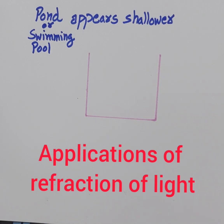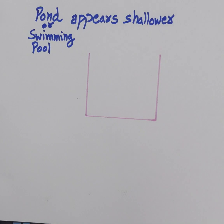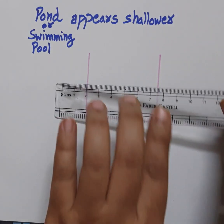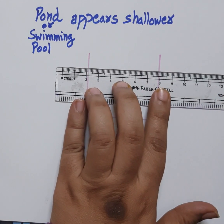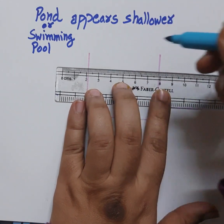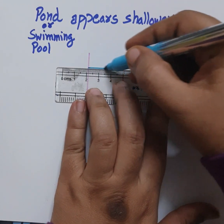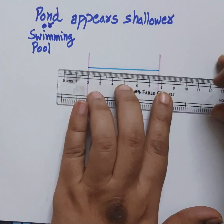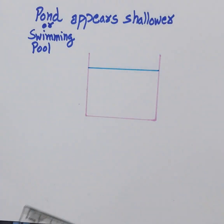To explain this with the help of a diagram, let's draw it. I have taken a picture of a swimming pool or a pond in the form of this shape, and let us now draw the level of water over here. This represents the level of water of the swimming pool or the pond.